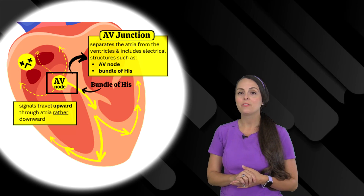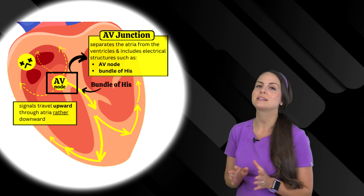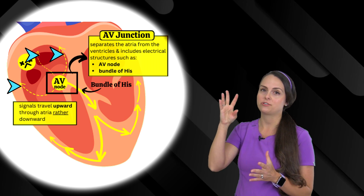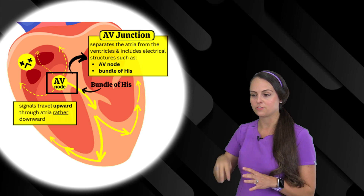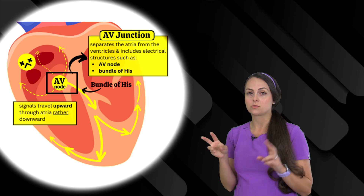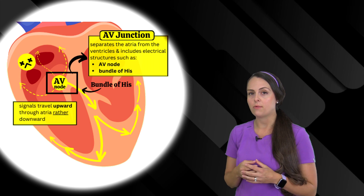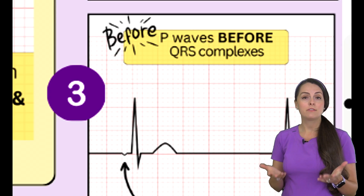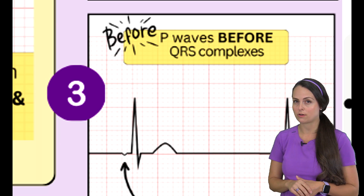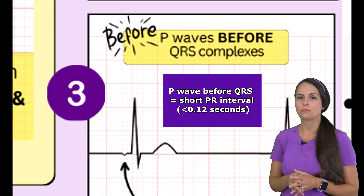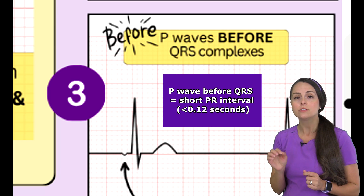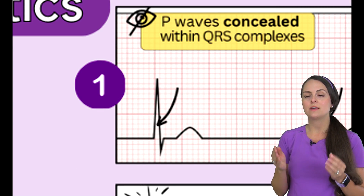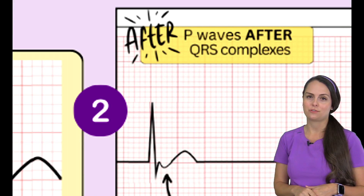However, the problem arises with how the P wave is going to present. Whenever electrical signals leave the AV junction, they actually send signals up through the atria — retrograde — which is not normal, as the SA node normally sends signals down through the atria. This has a profound effect on our P wave, meaning the P wave can appear in different locations on the ECG waveform. It may be in front of the QRS complex, but if it is, it will be very close to the QRS complex, creating a very short PR interval — less than the normal 0.12 to 0.20 seconds. Additionally, the P wave can be hidden or concealed within the QRS complex, or it can appear after the QRS complex.